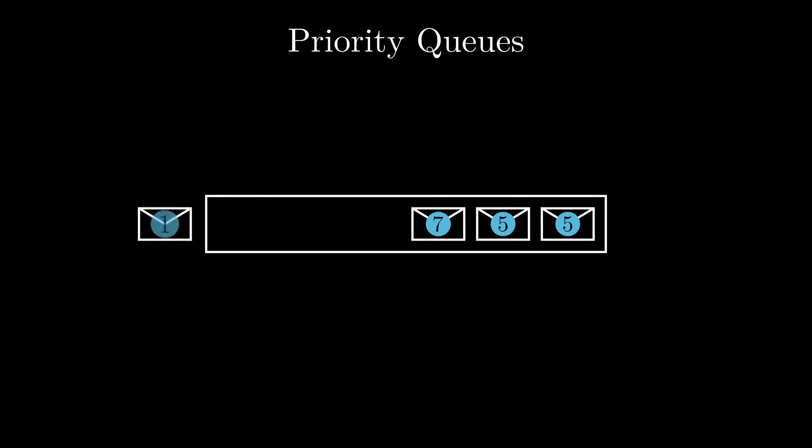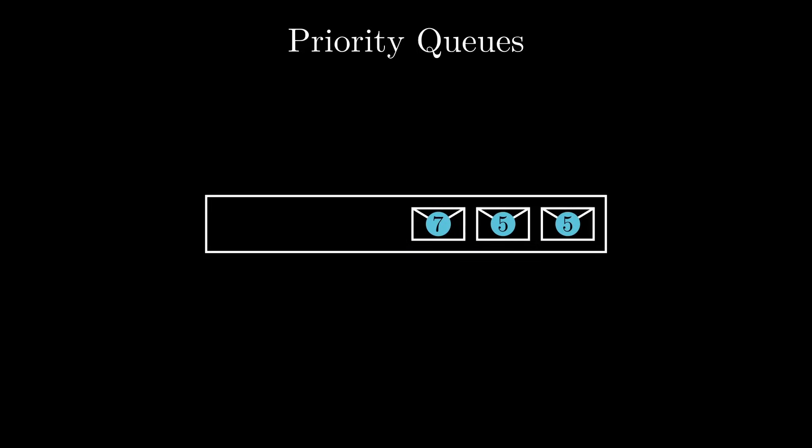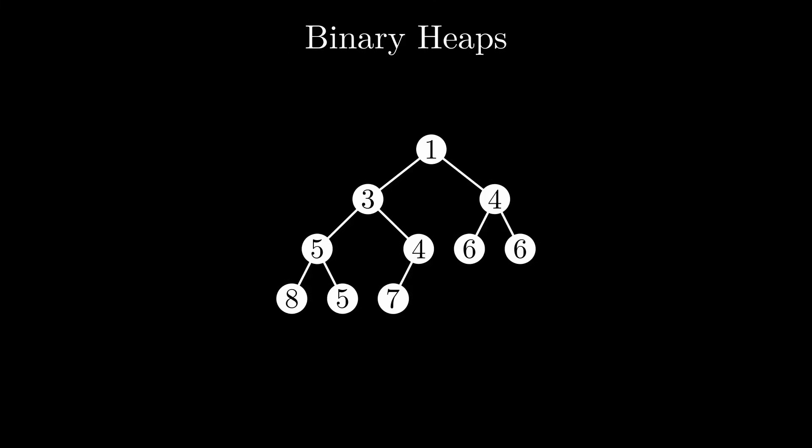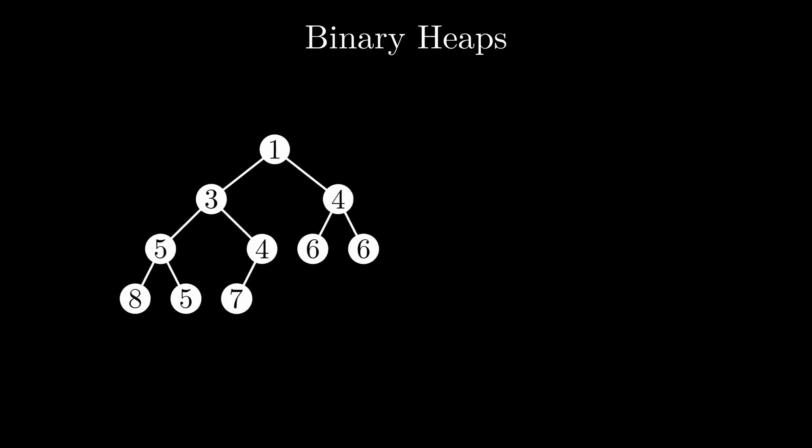Priority queues are really useful. They are used for example in Dijkstra's algorithm for finding shortest paths. By far the most common implementation of a priority queue is the binary heap. A binary heap is a binary tree where each node stores exactly one element with its key. Because it's a binary tree, every node has up to two children. But there are a few additional properties.